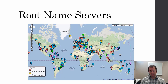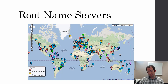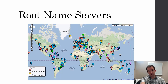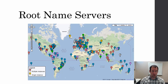So a through m — they are all over the world. There are servers in South America, North America, tons in Europe, all across Asia, up and down Africa, and Australia. Everybody's got root name servers. And if you try to go to l.root-servers.net, Anycast will direct you to the closest server to you.